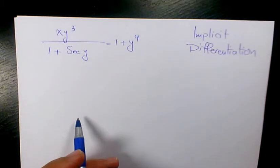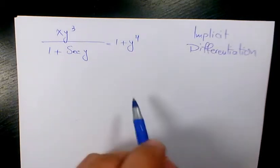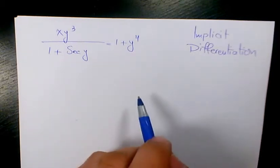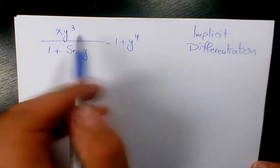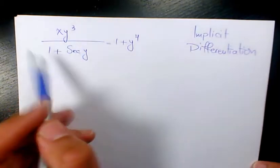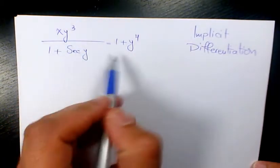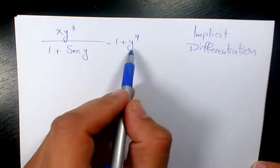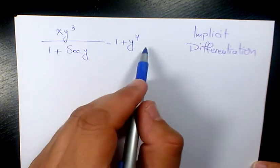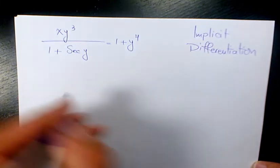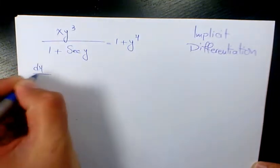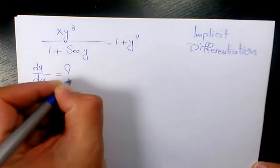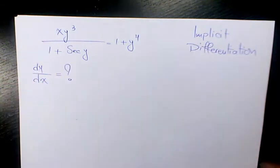What's up guys, this is Massey, welcome to another video. In this video I want to show you how to find the derivative of xy cubed over 1 plus secant y equals 1 plus y to the power of 4. I need to use implicit differentiation to find dy over dx.